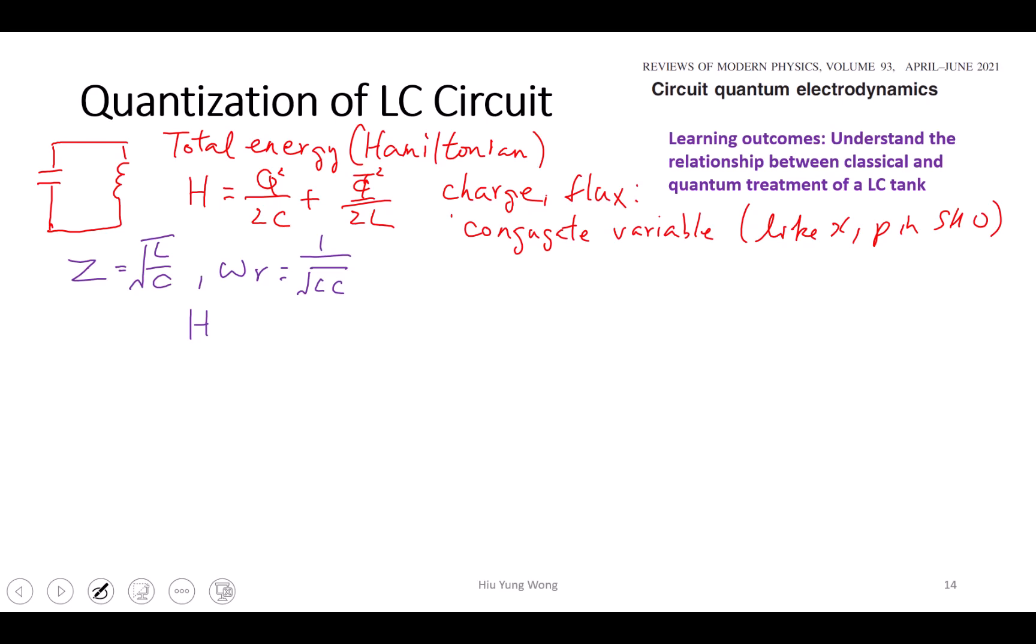You take it for granted if you learned transmission line before or some circuit theory. The impedance is square root LC. Its resonance frequency is 1 over square root LC. So because of this, I can further change the Hamiltonian into this variable.